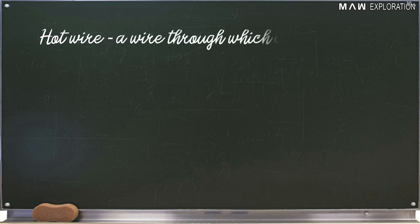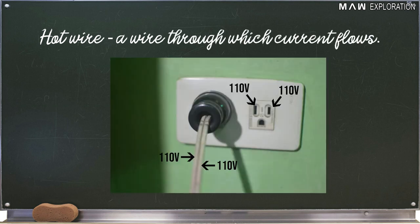Number six, hot wire. Hot wire is a wire through which current flows. Our electrical outlet at home has two 110 volts hot wire making it 220 volts. That wire's plug-in in our electrical outlet is not only hot, it is deadly. Don't you dare touch it, okay?